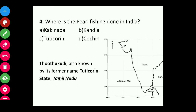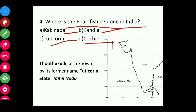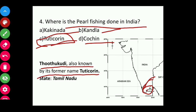Question four: Where is pearl fishing done in India — Kakinada, Kandla, Tuticorin, or Kochi? The answer is Tuticorin. You can see from the map this part is Tamil Nadu, and Tuticorin is located in the southernmost part of India. Its present name is Thoothukudi, also known by its former name Tuticorin, and it belongs to Tamil Nadu.